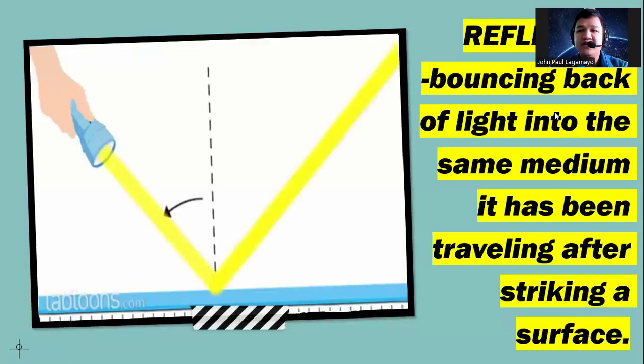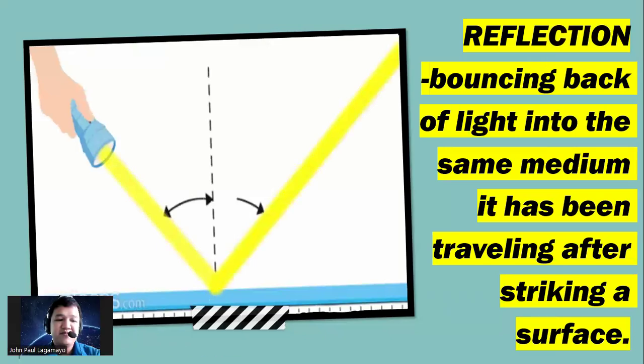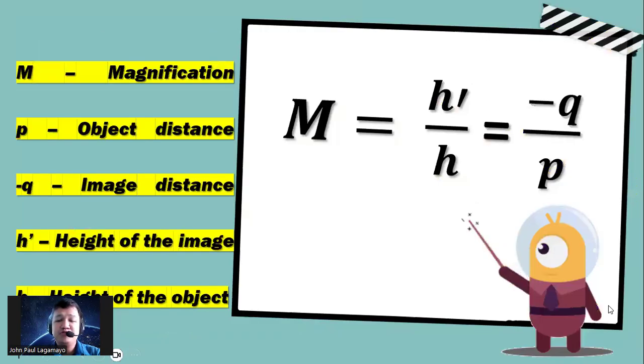Once we speak about reflection, this is what we call as the bouncing back of light into the same medium it has been traveling after striking a surface. We have the flashlight ray of light moving towards a particular medium or mirror, and then we can see that there is a reflected ray. So definitely, once you speak about reflection, they are the bouncing back of light in any object.